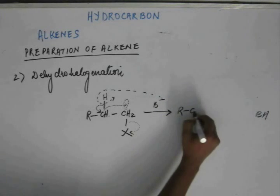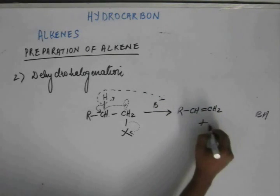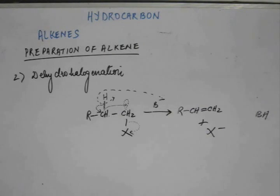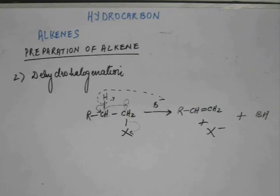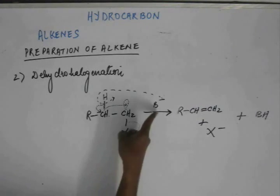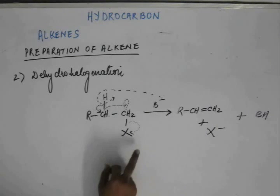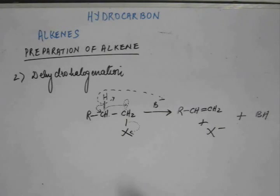The product we get is an alkene. In this reaction, the base is taking away hydrogen — that is dehydrogenation — and the halogen is also being removed — that is dehalogenation. Put together, we call it dehydrohalogenation. This is an elimination reaction.